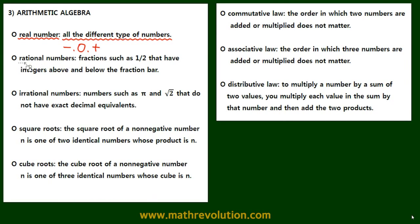A rational number is basically fractions such as one-half, that have integers above and below the fraction bar. For example we can have one-fifth, or three-sevenths, all these kinds of fractions are rational numbers.